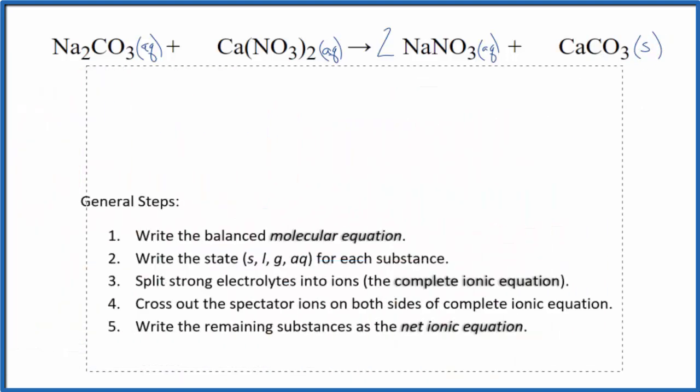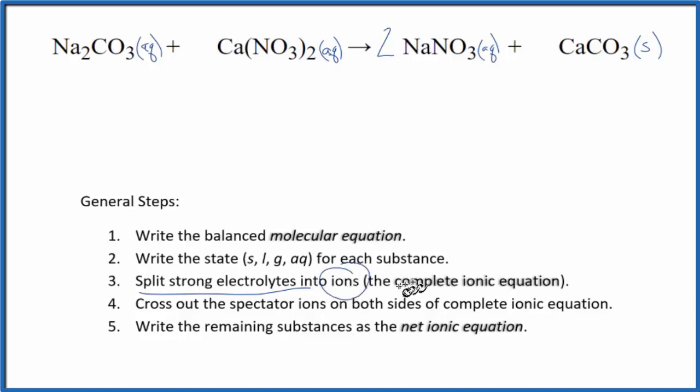So we have our states. Next, we split the strong electrolytes apart into their ions. This is the complete ionic equation. Sometimes it's called the total ionic equation. So we need to know the charges on each compound.